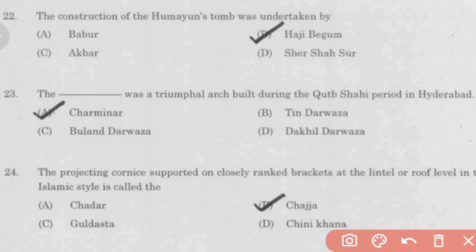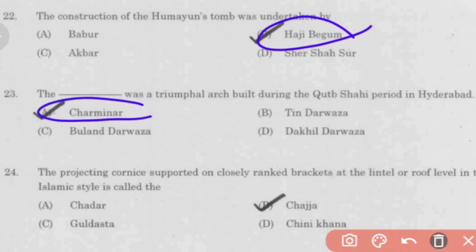The construction of Humayun's tomb was undertaken by Haji Begum. The Charminar was a triumphal arch built during the Qutb Shahi period in Hyderabad.